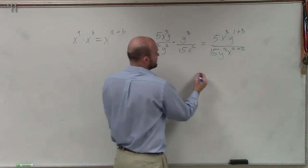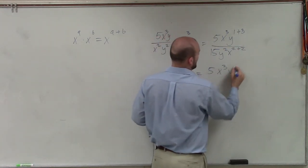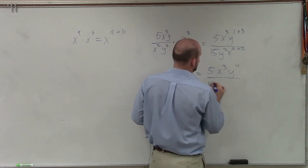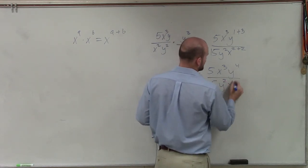Now, obviously, we can go ahead and simplify this. So I have 5x cubed times y to the fourth divided by 15y squared x to the fourth.